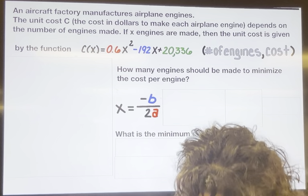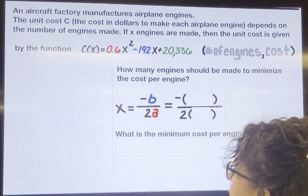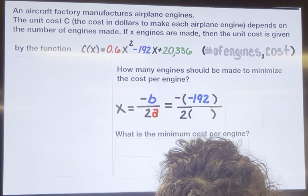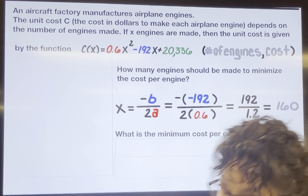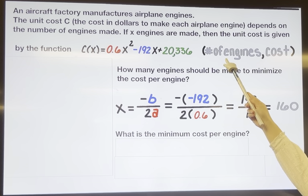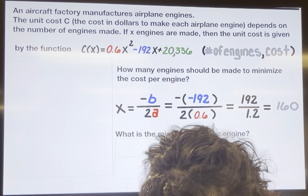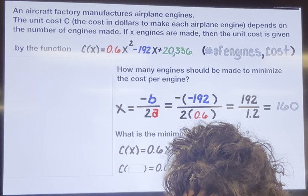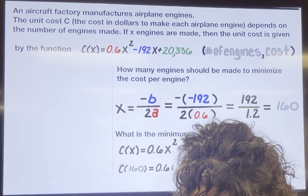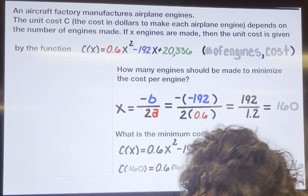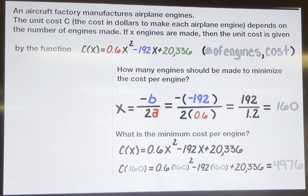Let's use the formula to find our vertex. Substituting negative 192 for b and 0.6 for a, simplifying gives us 160. So 160 engines gives the minimum cost. The minimum cost is the y-coordinate, so we substitute 160 into the equation. Putting 160 into the equation and simplifying, we end up with $4,976 dollars.